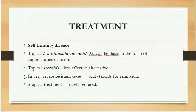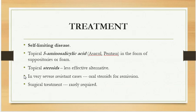As far as treatment is concerned, in many patients proctitis is a self-limiting disease. Topical use of 5-aminosalicylic acid in the form of Asacol or Pentasa — as suppositories or foam — is used. Topical steroids are also used but are less effective alternatives. In very severe resistant cases, oral steroids are used for remission. Oral 5-aminosalicylic acid preparations are also available and used for treatment. Surgical option is rarely required; usually these cases are treated medically.